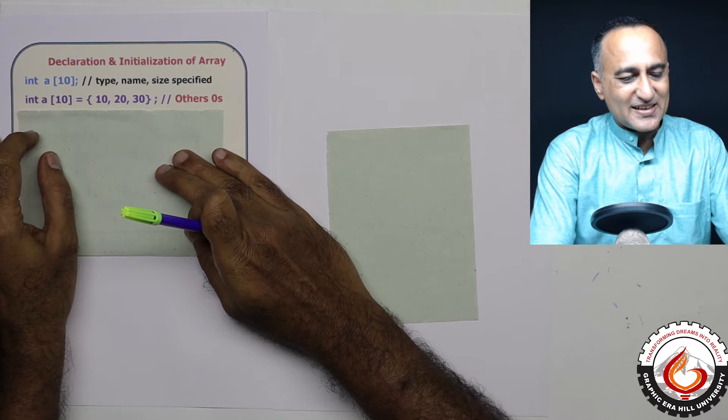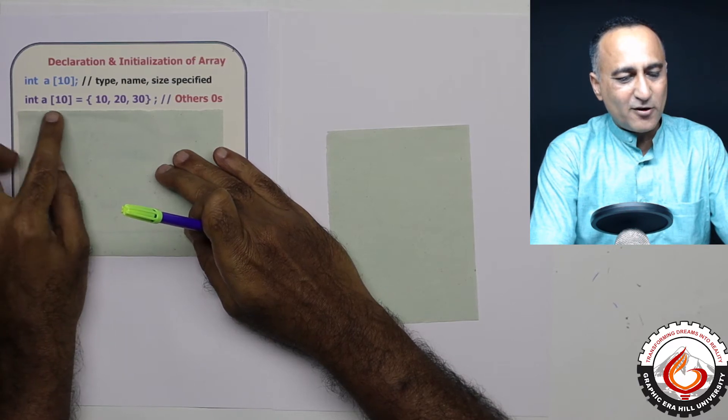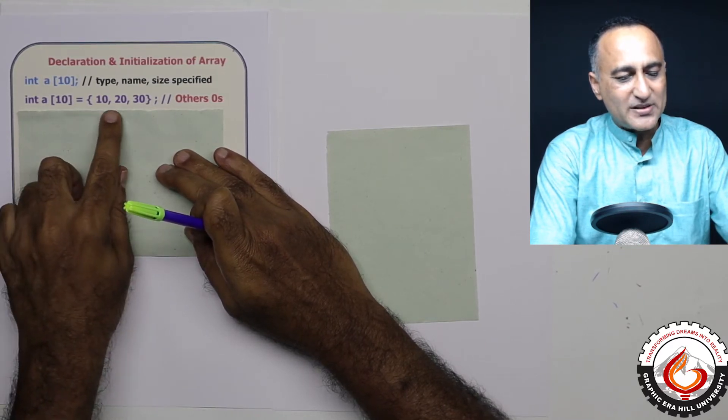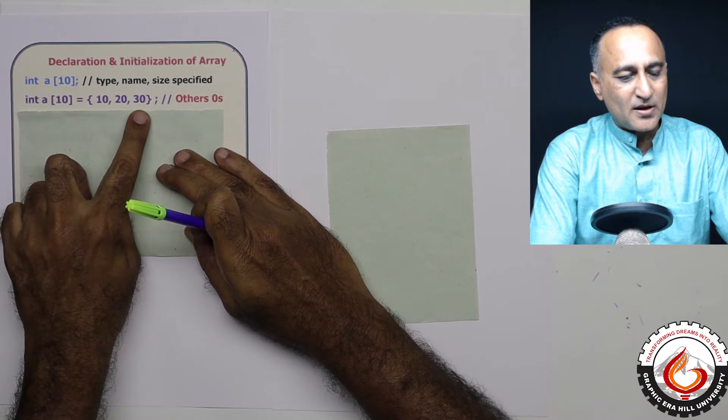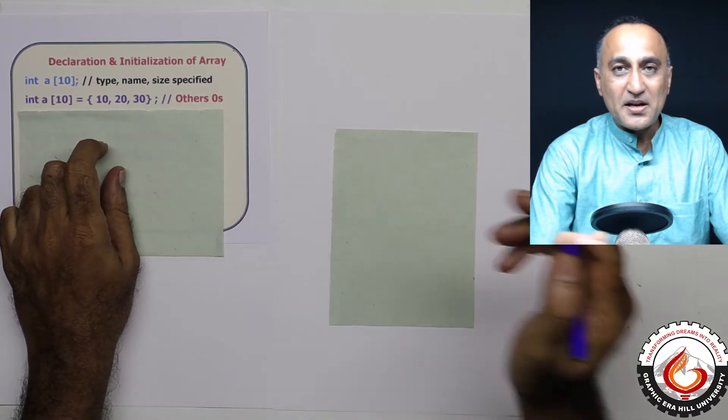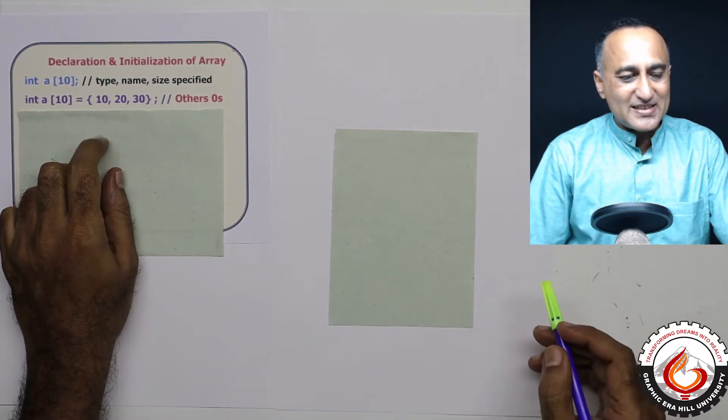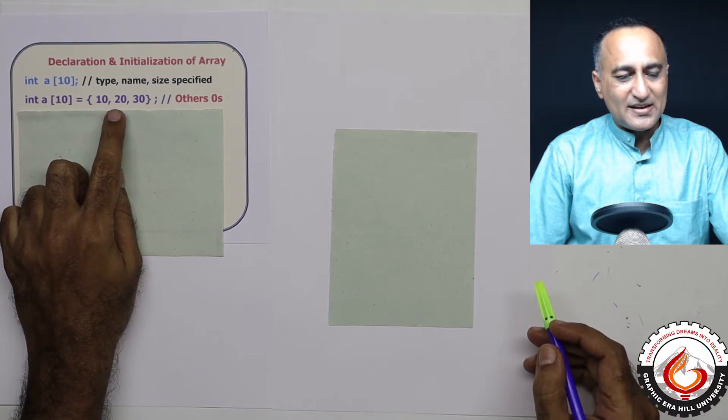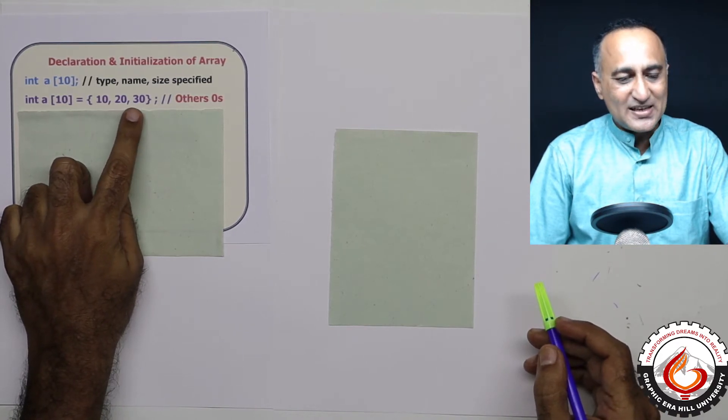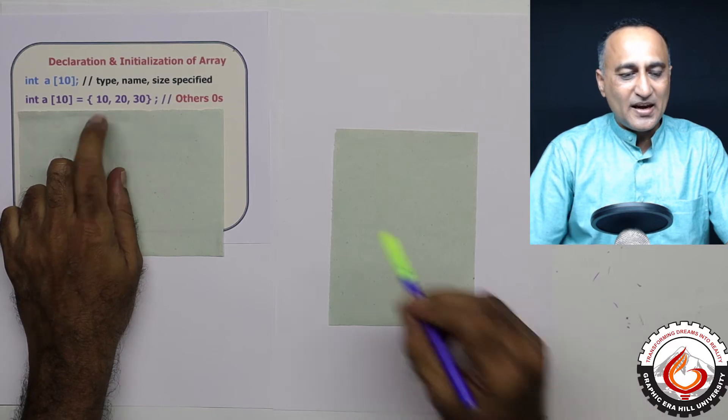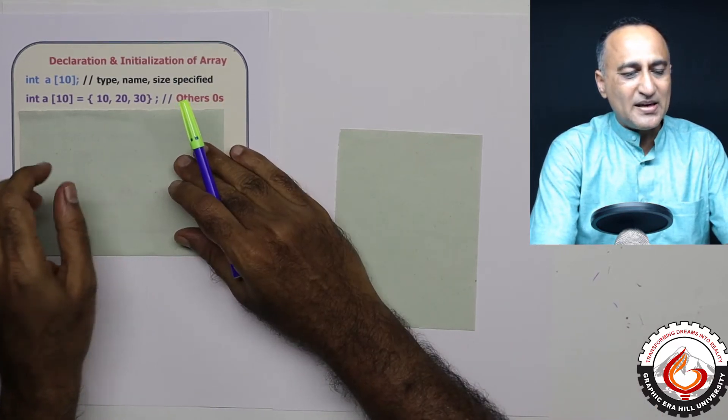Now if I want to initialize it, suppose I declare an array a of 10 and I give it values like 10, 20, 30 only. Now I have not given values to the remaining positions. So what it does is the zero position will be 10, the first position will be 20, second position will be 30, and all the others will end up becoming zeros.